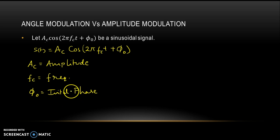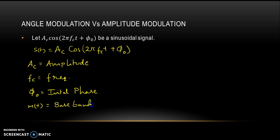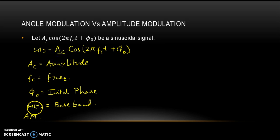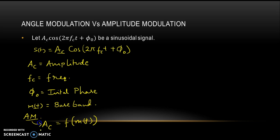In amplitude modulation you have the message signal m(t), also called the baseband signal — the signal which we have to transmit. In amplitude modulation, the amplitude of the carrier signal is basically a function of the message signal. So AC is a function of m(t) when we have the condition of amplitude modulation.